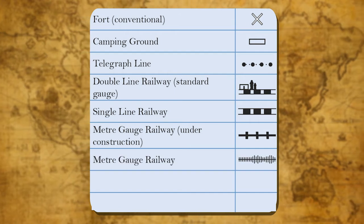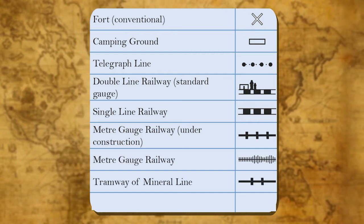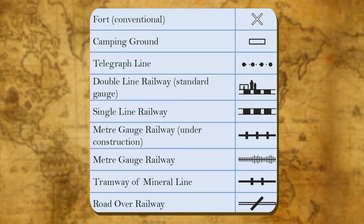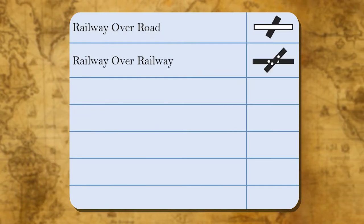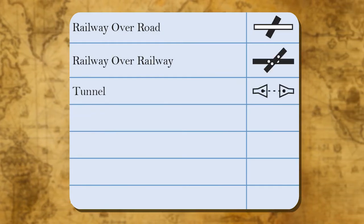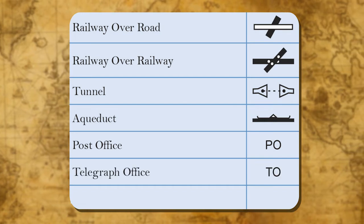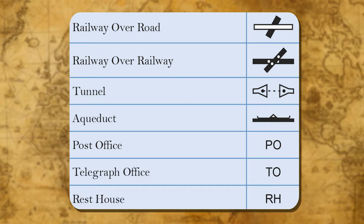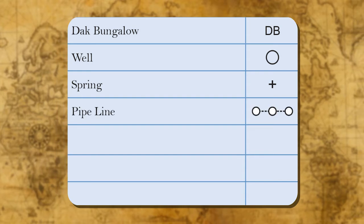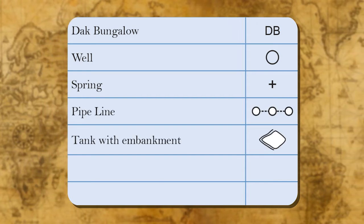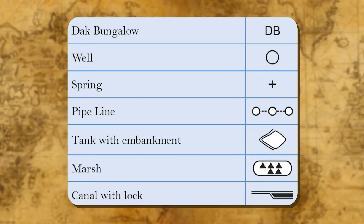Further symbols include: single line railway, metre gauge railway under construction, metre gauge railway, tramway or mineral line, road over railway, railway over road, railway over railway, tunnel, aqueduct, post office, telegraph office, rest house, dark bungalow, well, spring, pipeline, tank with embankment, marsh, canal with lock.